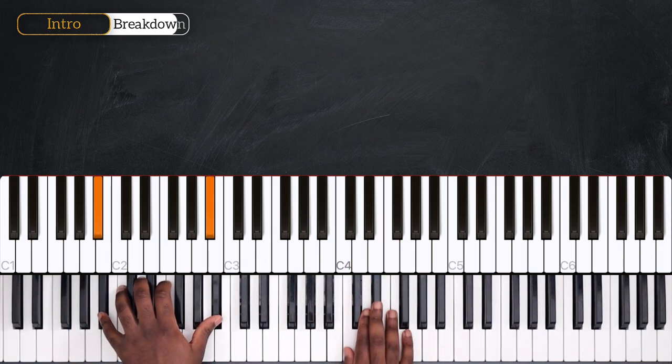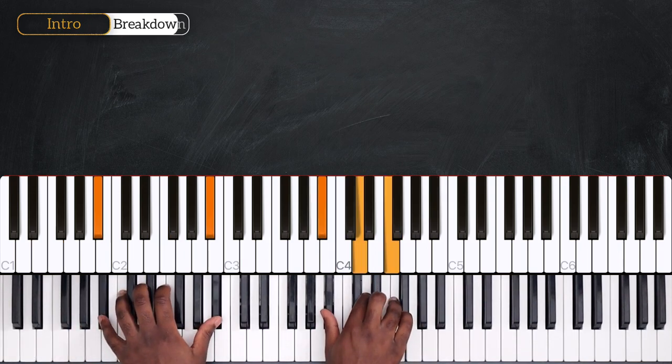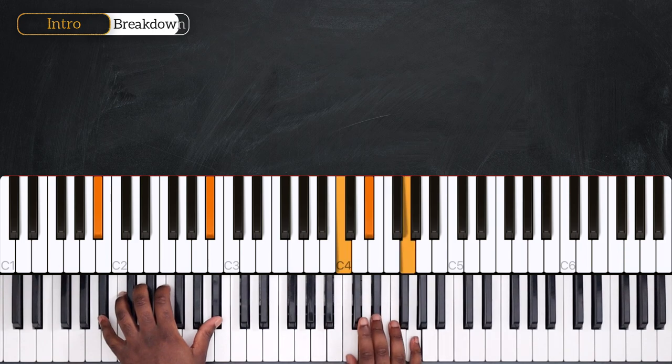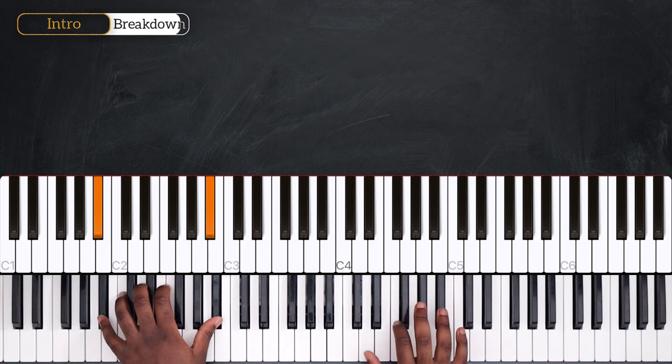And then finally for Bb major, we have Bb, then C minor with C, Eb, G. Back on Bb, this time playing it on its first inversion. So D, F, Bb.